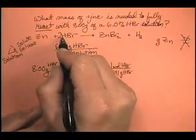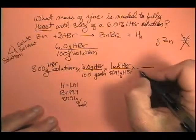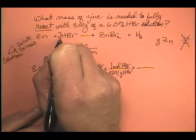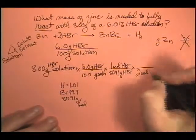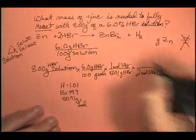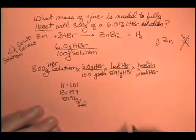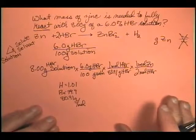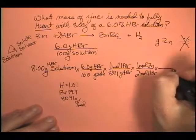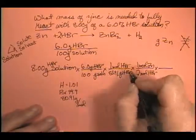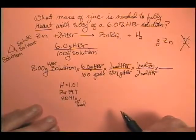Now I can get from HBr to zinc, and I can say, okay, for every 2 moles of HBr, I react with 1 mole of zinc. 2 moles of HBr gives me 1 mole of zinc, or reacts with. And now, if I were to stop right now, grams of HBr, grams of HBr, moles of HBr, moles of HBr, I'm left with moles of zinc.